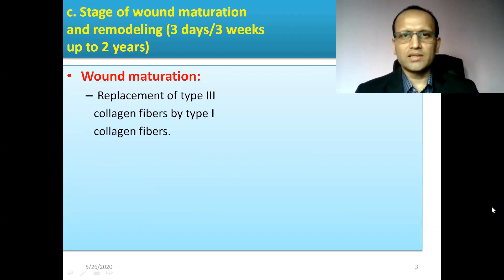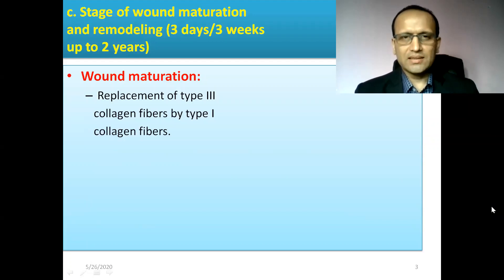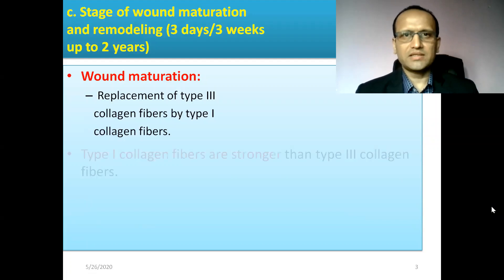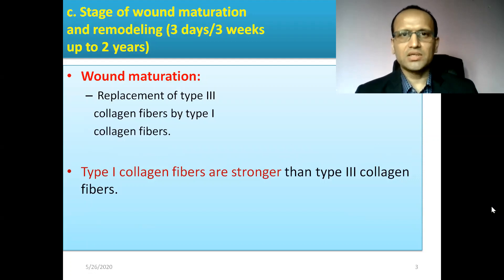In stage 2 of the wound healing process, type 3 collagen fibers are deposited in the wound space. But in stage 3, these type 3 collagen fibers are replaced by type 1 collagen fibers because type 1 collagen fibers are stronger.